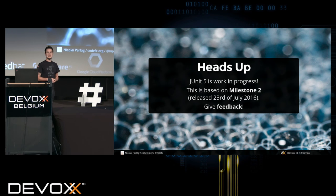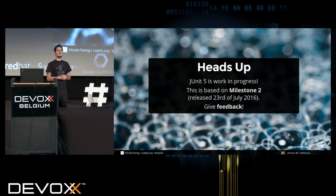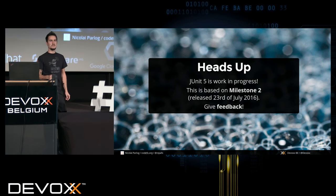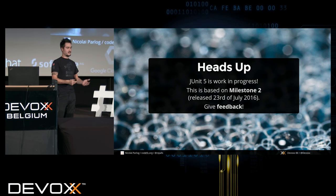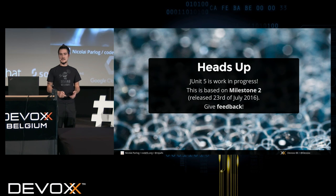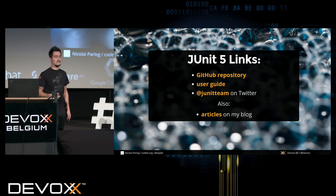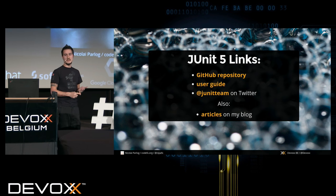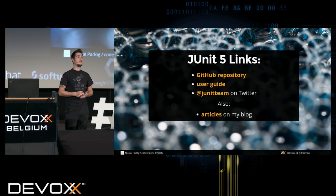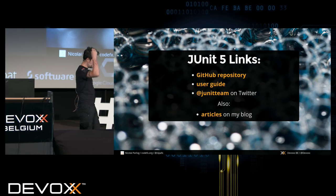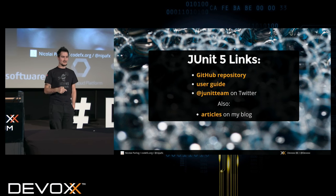JUnit 5 is a work in progress, so that means there will be at least half a year more before any general availability will be released. If you want to provide feedback because you're missing some feature or have a good idea, now is a good time to do that. There's a GitHub repository, a great user guide you can read in an hour or two, and you'll know pretty much everything there is to know about JUnit. I'm not part of the team — I'm just interested in the project.